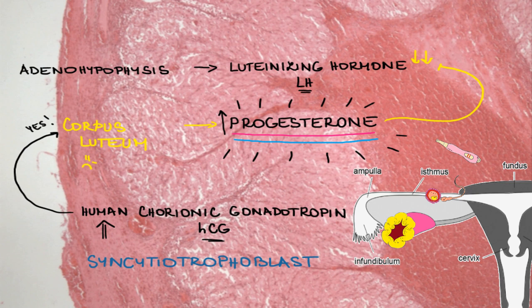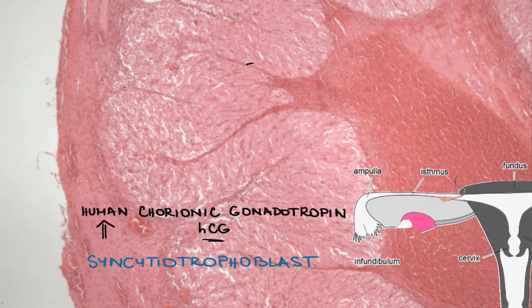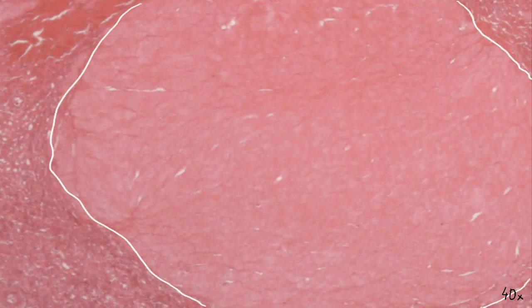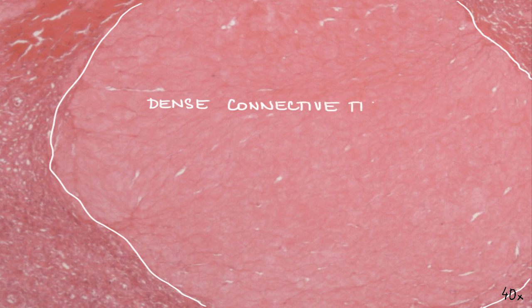Cells of the corpus luteum, having done their job, undergo programmed cell death — so-called apoptosis. This process results in a structure called the corpus albicans, from Latin 'whitish body.' There is a corpus albicans in the section of the woman's ovary — it is a pale whitish structure made of dense connective tissue. After some time, remnants of the corpus albicans are phagocytosed by macrophages and replaced by connective tissue from the cortex of the ovary.